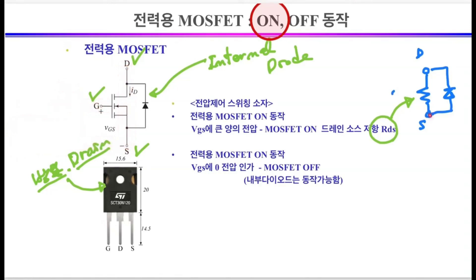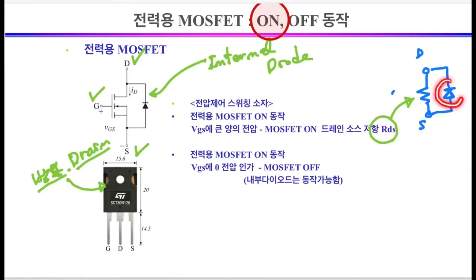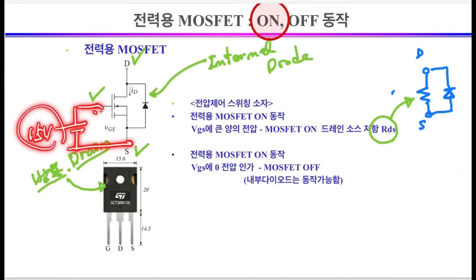However, in reality, there will be resistance between the drain and the source. This is called the on-resistance, RDS, of the MOSFET. Since the diode is also attached, if a voltage greater than the threshold voltage between gate and source is applied, a circuit with a resistor and diode connected in parallel between the drain and source will be formed.